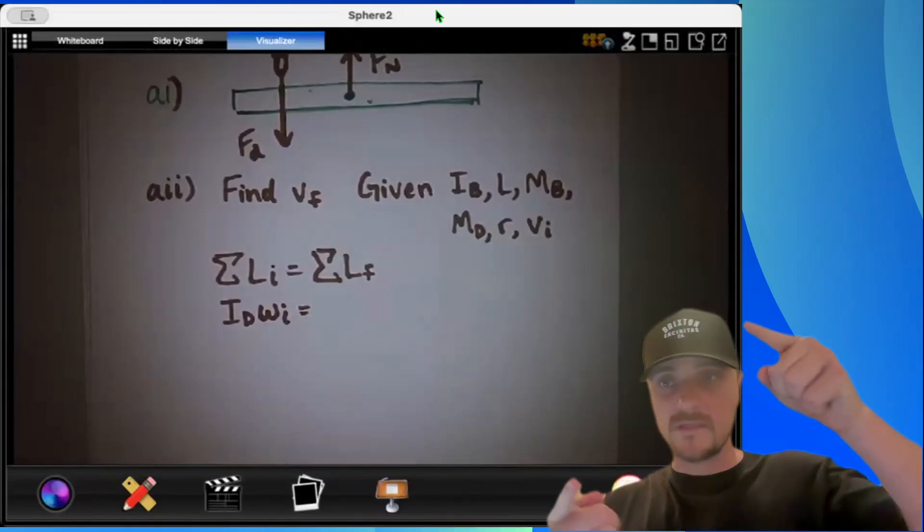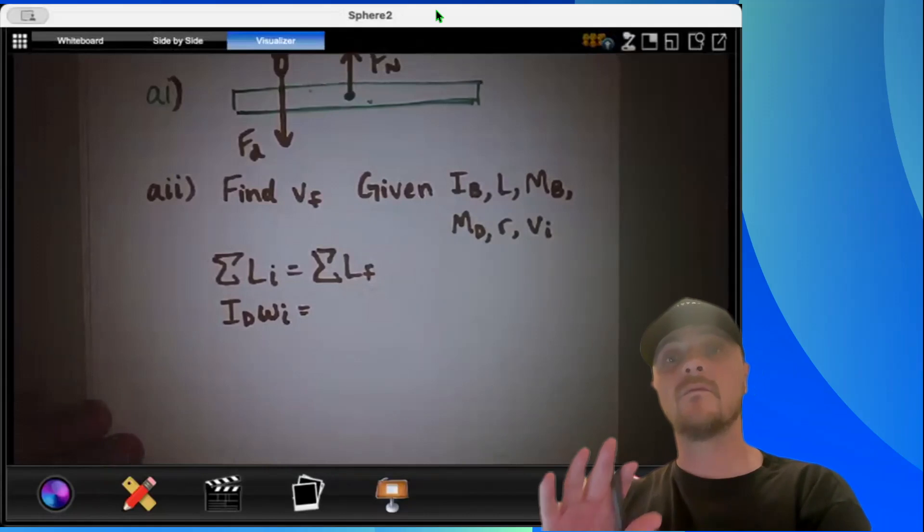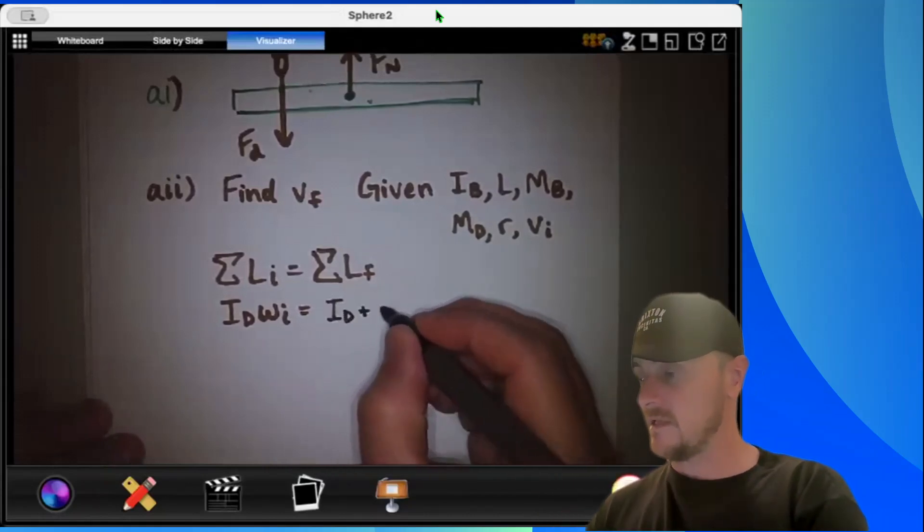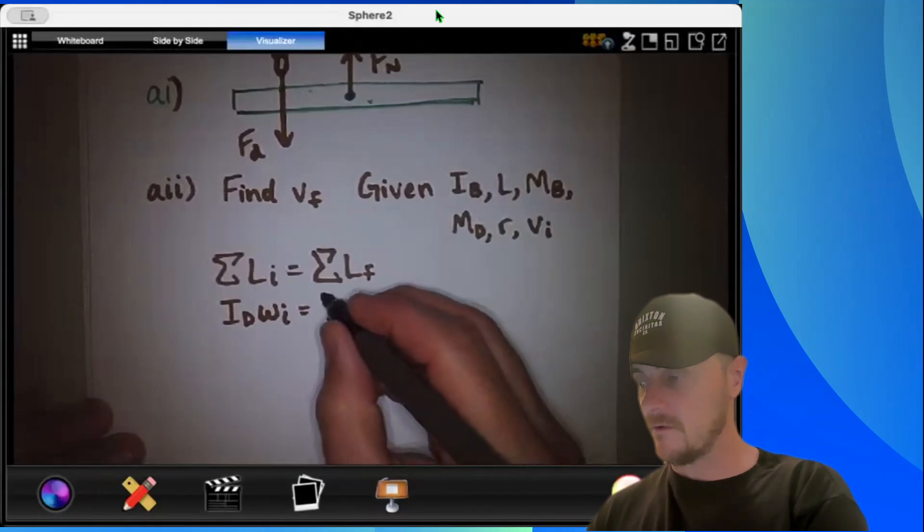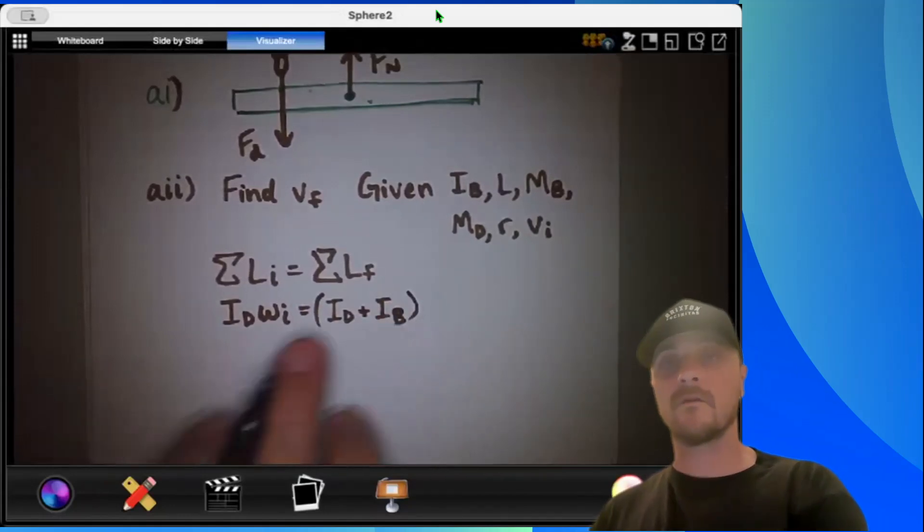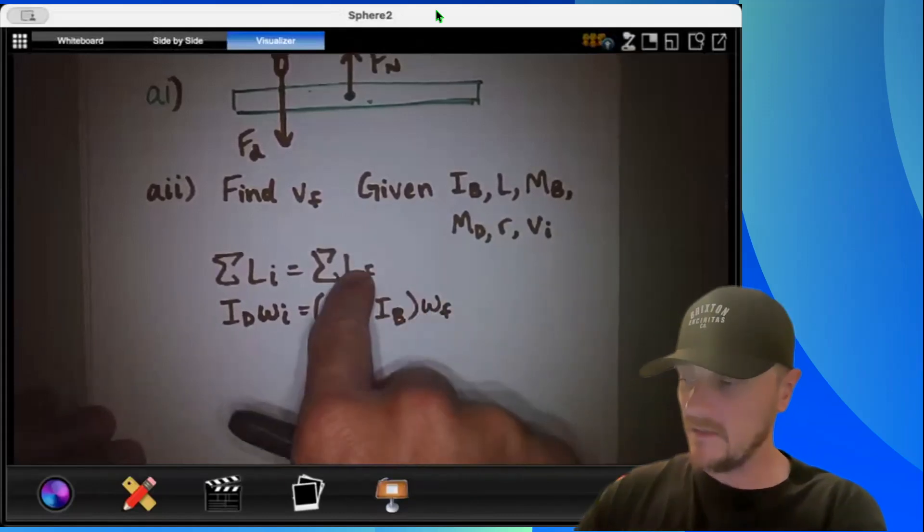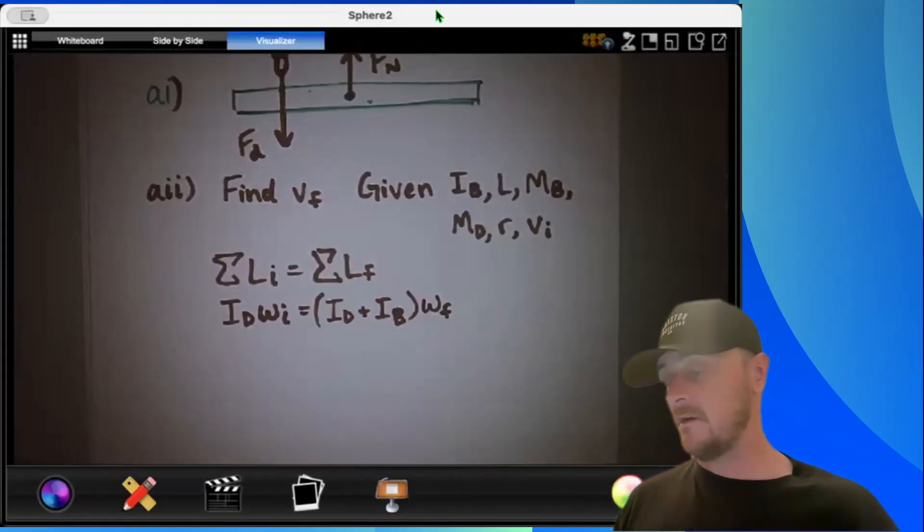The dart hits and this whole bar wants to now spin. So there's two rotational inertias. We have both the I of the dart plus the I of the bar together, and those two added together are the total rotational inertia of the system times the final angular velocity. Remember, I times omega is angular momentum, and there's a great place to start for the rest of our derivation.